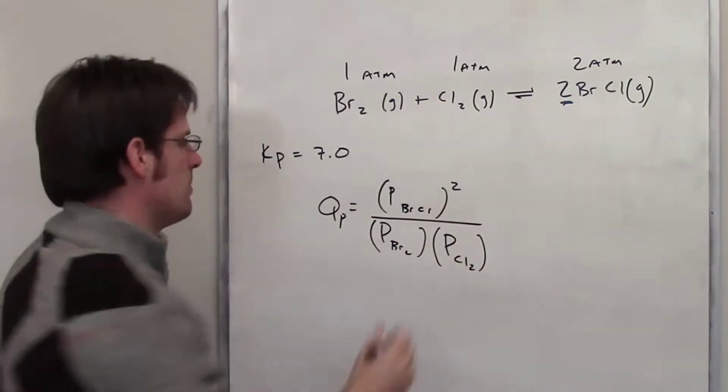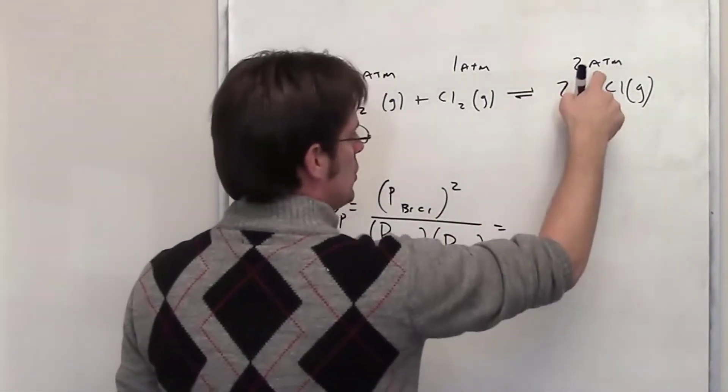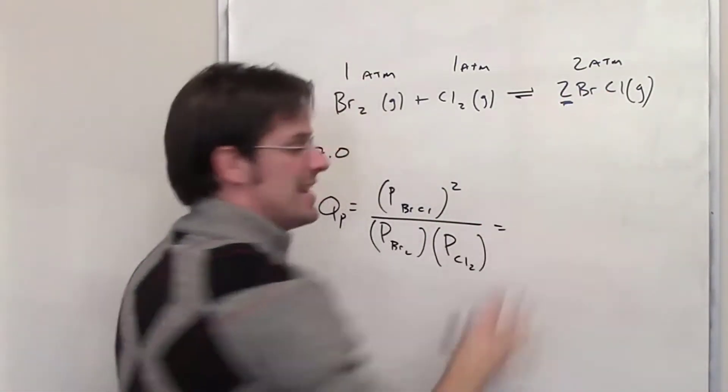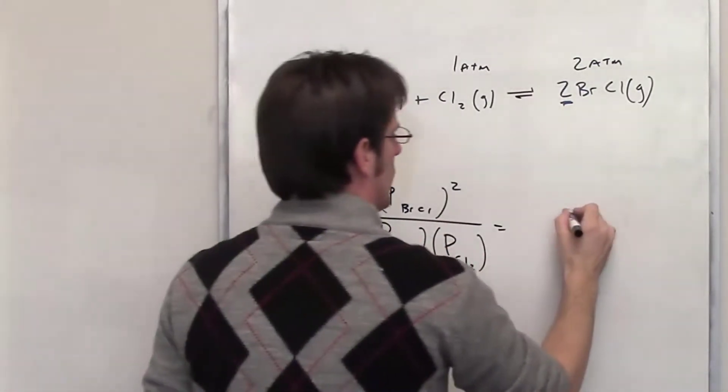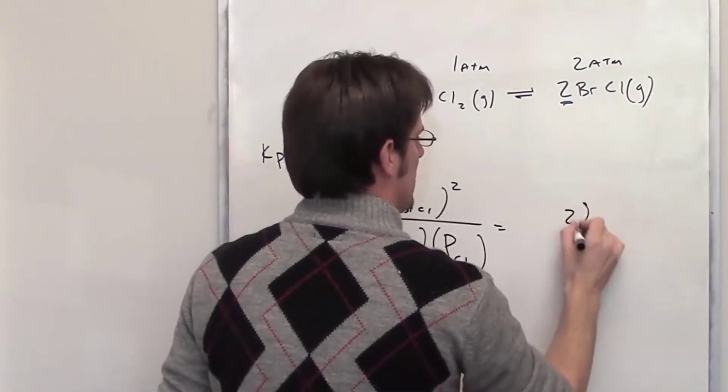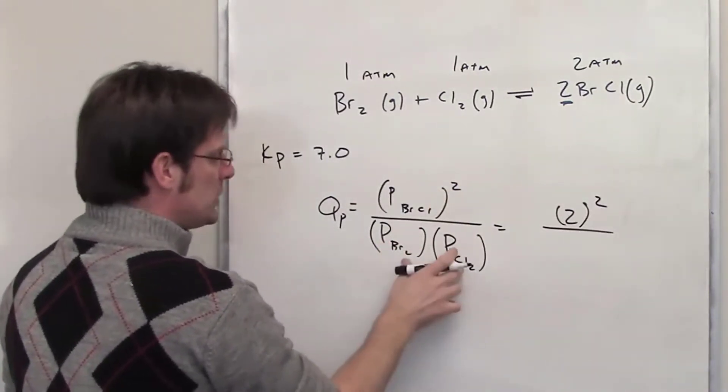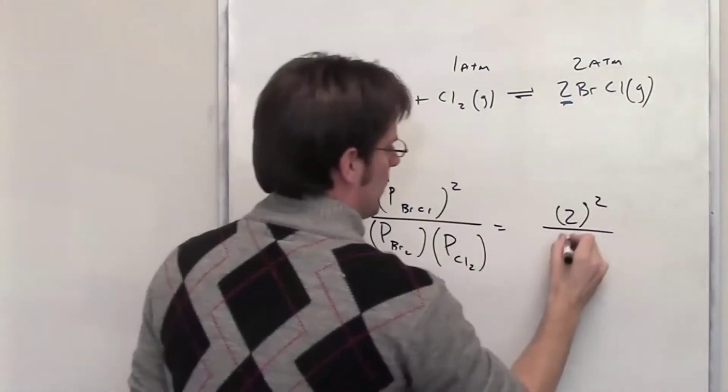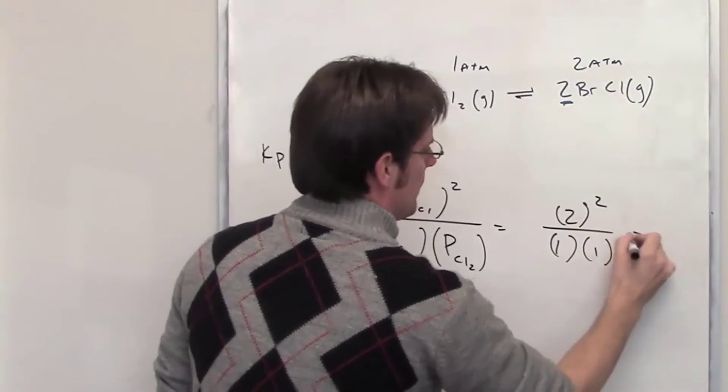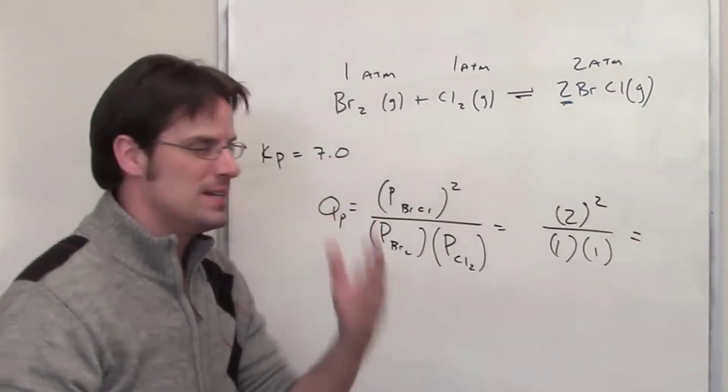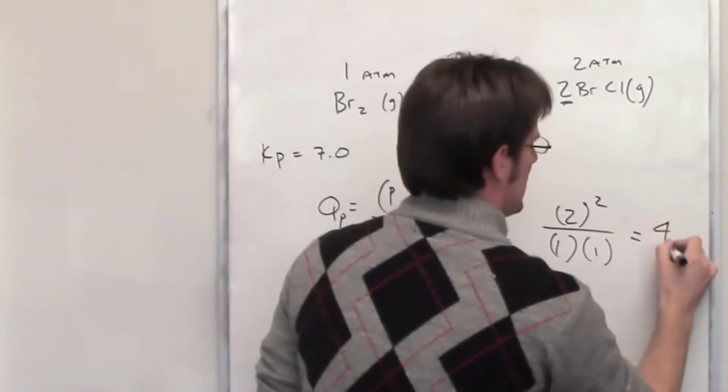So let's go ahead and put these numbers in here. I have two as the pressure at initiation for the bromine chloride so I'll go ahead and put two in there on the top and square it, and my initial pressures for bromine and chlorine respectively are one and one. If I throw that into my calculator or my brain I guess that is going to equal four.